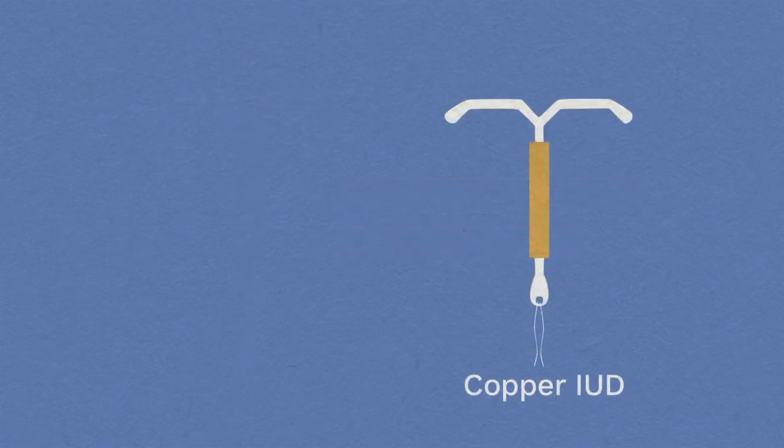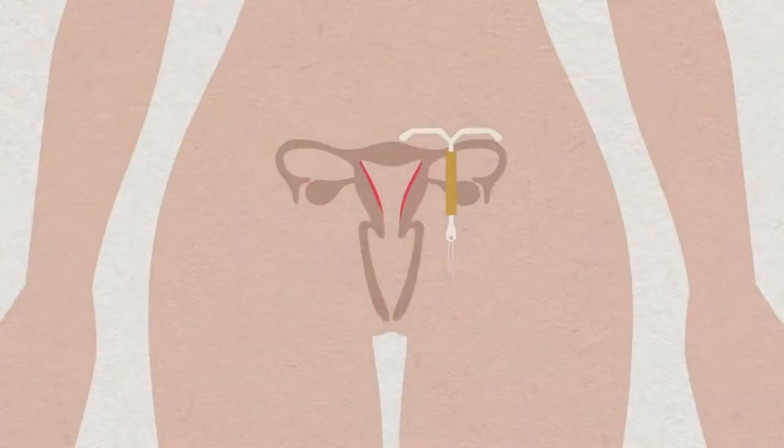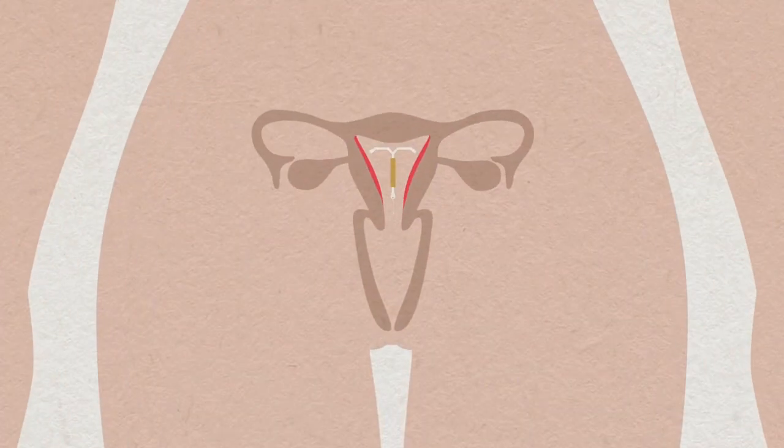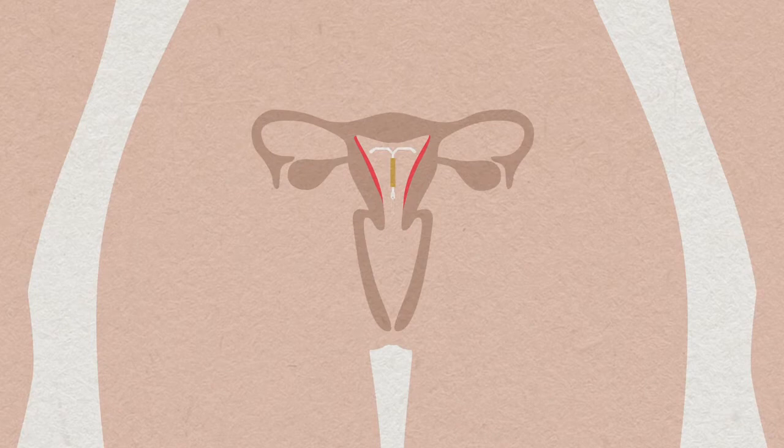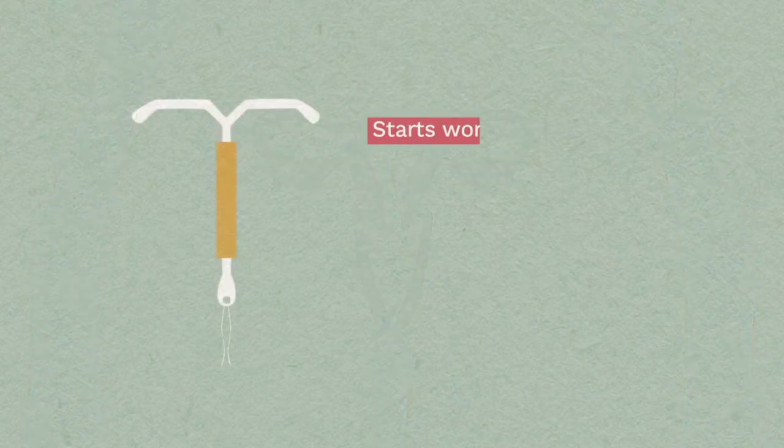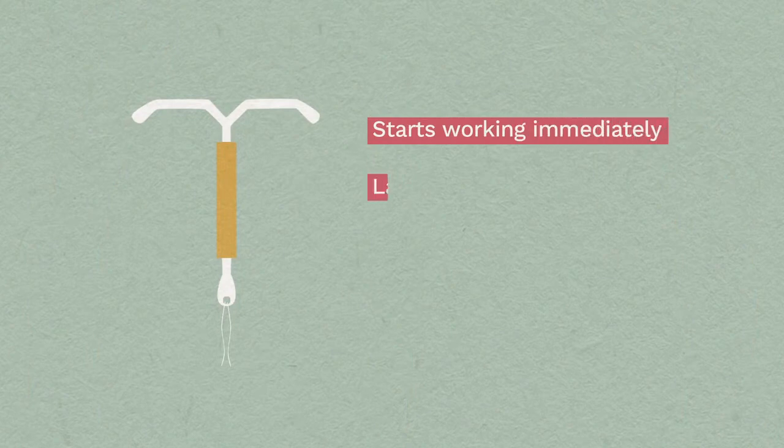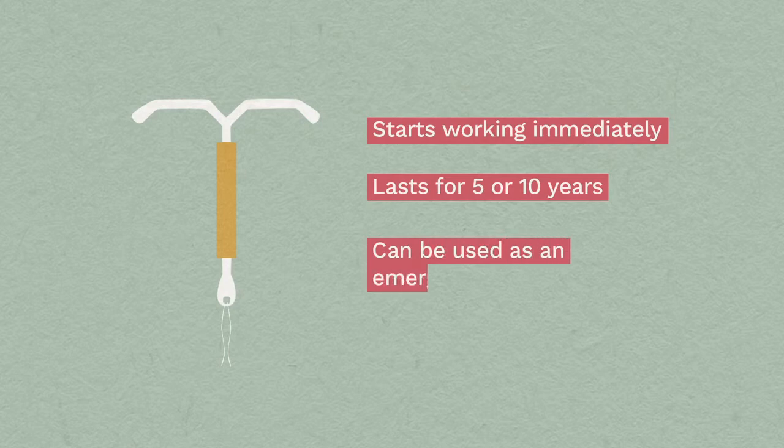The copper IUD contains no hormones. The copper kills sperm and eggs, which prevents fertilisation, and it stops a pregnancy implanting if fertilisation has already happened. It's effective as soon as it's been fitted, and it lasts for 5 or 10 years. It can also be used for emergency contraception.